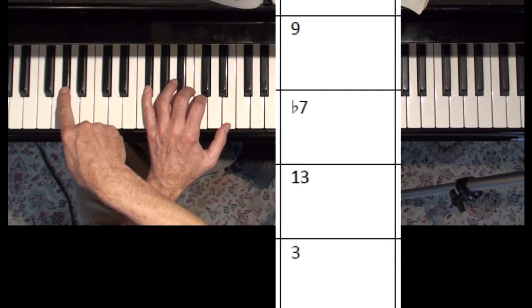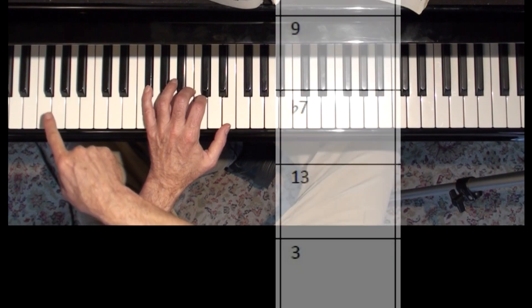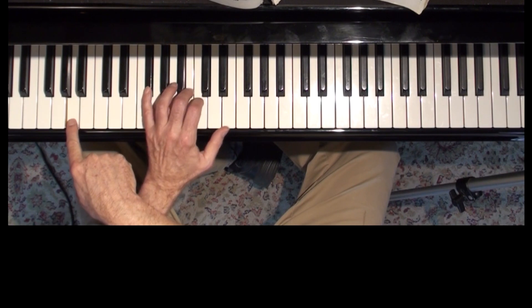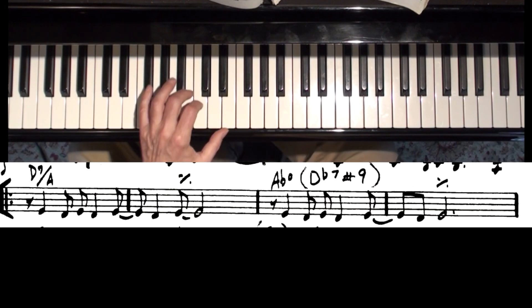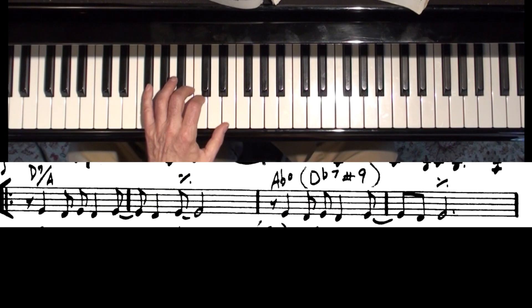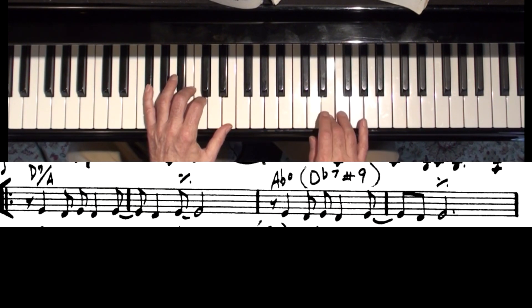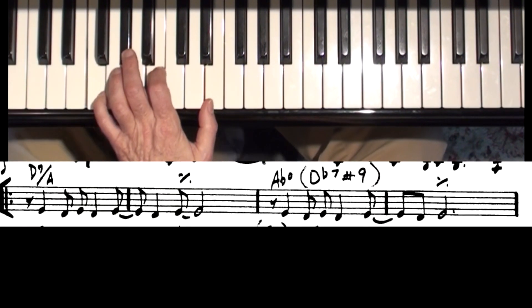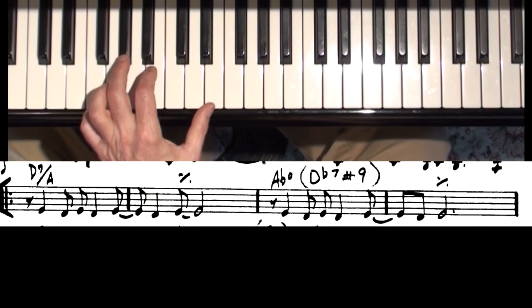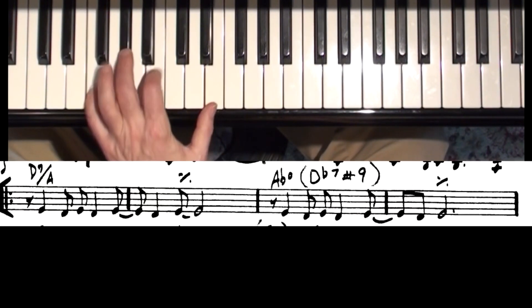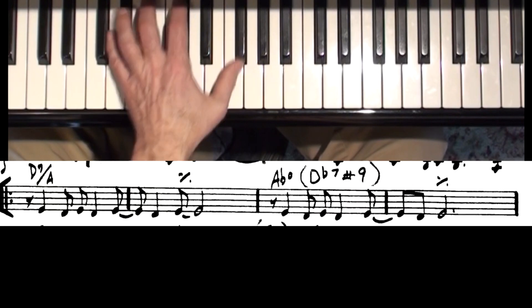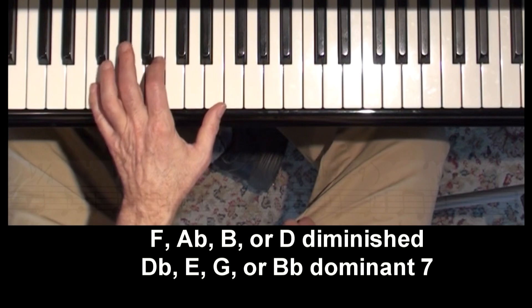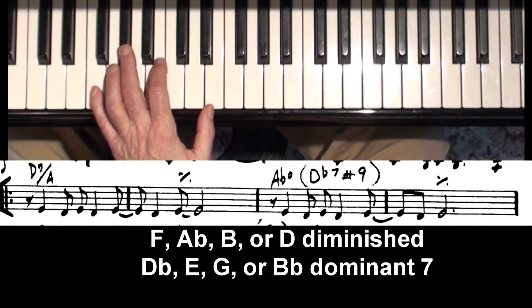It could also be an A-flat altered. It could be, what else could it be, F-sharp minor 7-flat-5. It could be A minor 6th, A minor 6-9. It's a very flexible chord. Right now we're using it as D7. This is box 3 for you boxology fans. What I'm referring to there is just a particular shape. This shape.